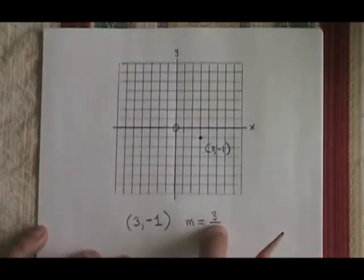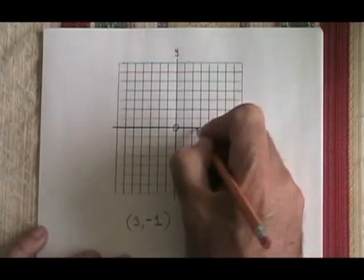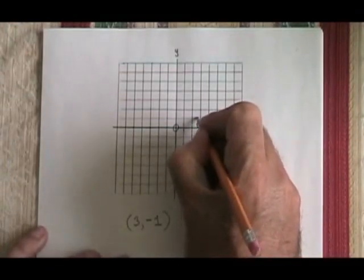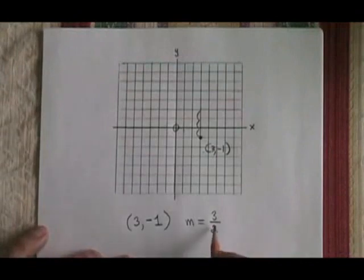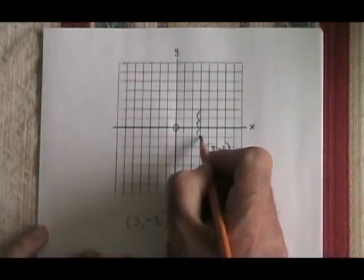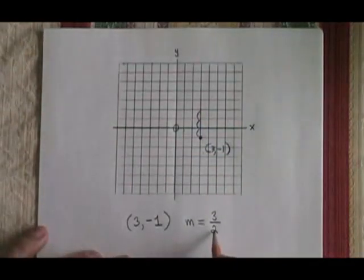Rise means a vertical distance, going up or down. If I have a numerator of positive 3, it means I have to rise by 3. So I choose to signify this, these little lines. Then I do the run. Not from my starting point, but from where I ended up after my rise of 3. I do a run of 2.